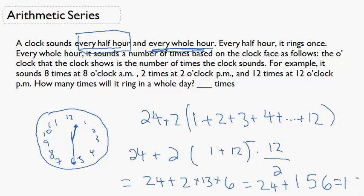That equals 180. Basically, what we did is we converted this word problem into an expression which we could use arithmetic series to solve easily. The answer is 24 plus 2 times (1 + 2 + ... + 12), which is 24 plus 156, which equals 180.